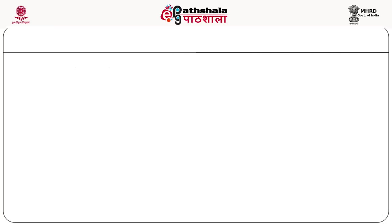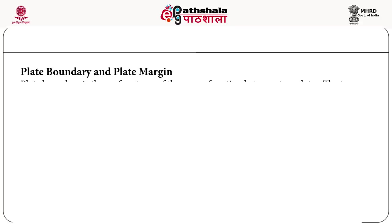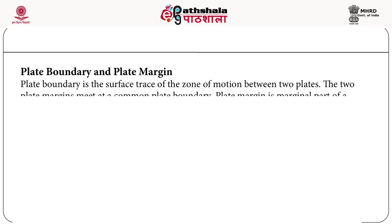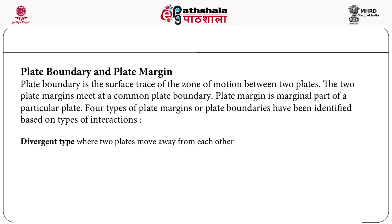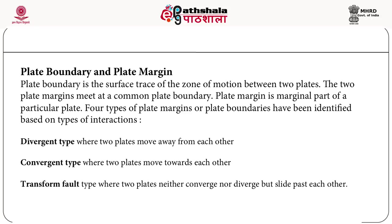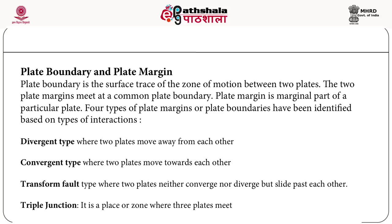The difference between plate boundary and plate margin: a plate boundary is the surface trace of the zone of motion between two plates, where two plate margins meet. A plate margin is the marginal part of a particular plate. Four types of plate margins have been identified: divergent type, where two plates move away from each other; convergent type, where two plates move toward each other; transform fault type, where two plates slide past each other; and triple junction, where three plates meet.